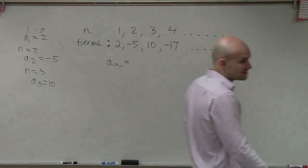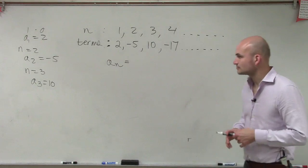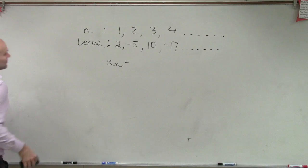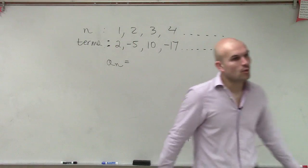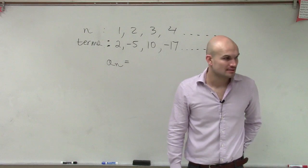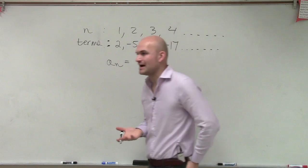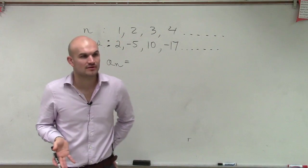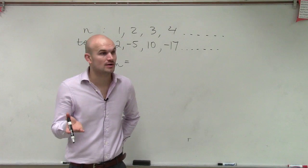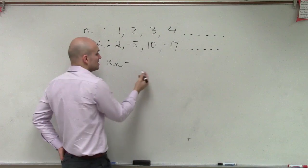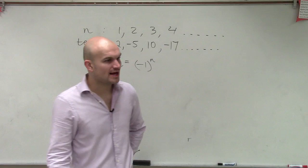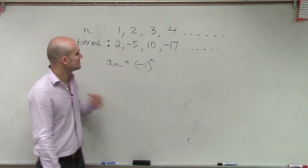One thing we noticed is we go from positive to negative. When we looked at those formulas, how did we do that? We had an exponent — something raised to a power — we had a negative one. So we know there's probably going to be a negative one raised to the n-th power. That is going to happen.